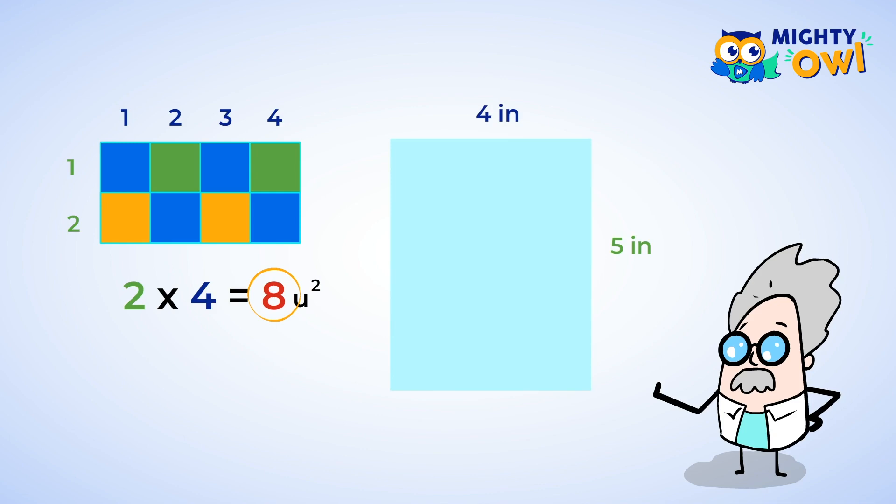Look, this side is labeled four inches. So we can make four squares that are each one square inch. And this side says five inches. Yep, that's right. We can make five one inch squares.